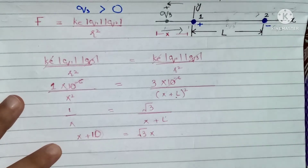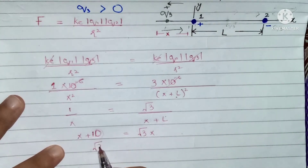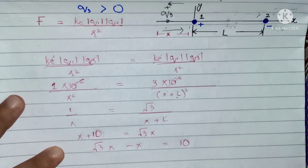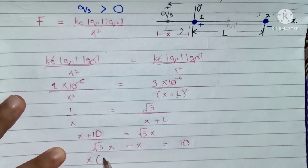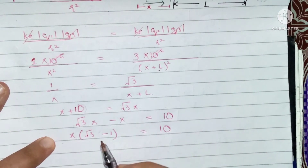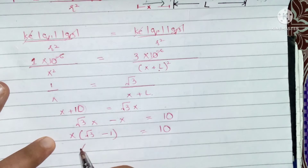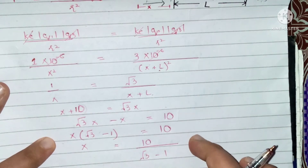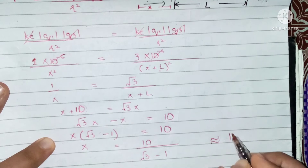Rearranging, √3·x − x = 10. Taking x common: x(√3 − 1) = 10. Therefore x = 10 / (√3 − 1). Substituting into a calculator gives approximately 14 centimeters.